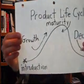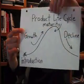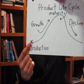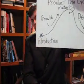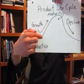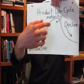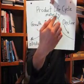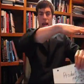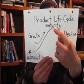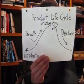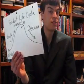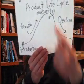So the product life cycle is: introduction — we make our book. Growth — we start selling the books, we sell many books, that's called growth. Then it flattens out at maturity. And then after maturity it just declines — sales go down in decline.